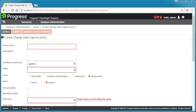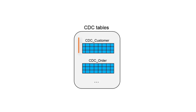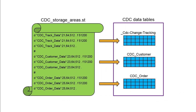If the CDC level is higher than Minimal, a CDC change table is created in the source database when you define and activate a CDC policy for a source table.